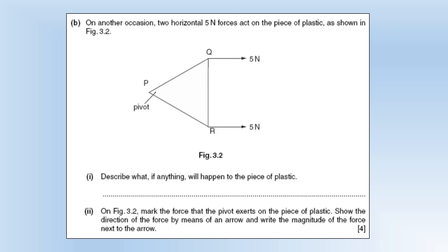On another occasion we've got two five newton forces acting. Describe what will happen to the piece of plastic. Nothing. Because the moments of the forces are going to cancel each other. The force at Q has a clockwise moment. The force at R has an anti-clockwise moment. They're both exactly the same distance from P, so that gives us an overall moment of zero. On the diagram mark the force that the pivot exerts on the piece of plastic. If it's going to be stationary it must be a force to the left to cancel out the forces to the right, and it must be ten newtons to cancel out the two five newton forces to the right.